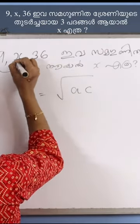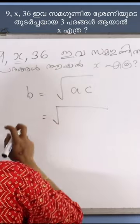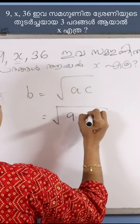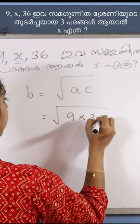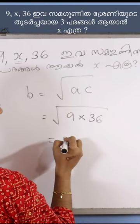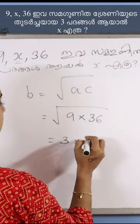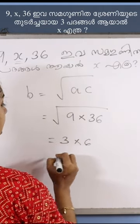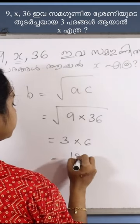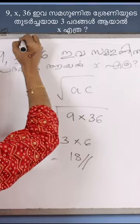B is the same thing as √C. Now, C is 36. So √(9×36) is the same thing as √36. Therefore, 3×36 is the same thing. I will improve the middle.